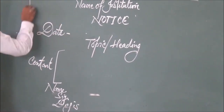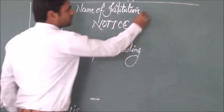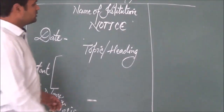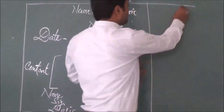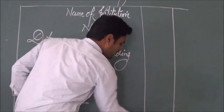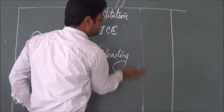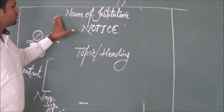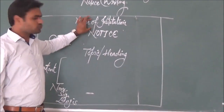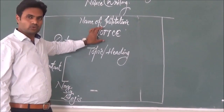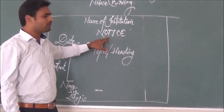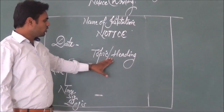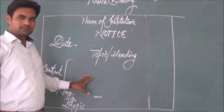This notice will always be kept in a box, like this. The margins on both sides should be equal, just like this. In the middle of this box, that will be the name of the institution, thereafter 'Notice' written in block capital letters, then the date, topic, heading, and content.